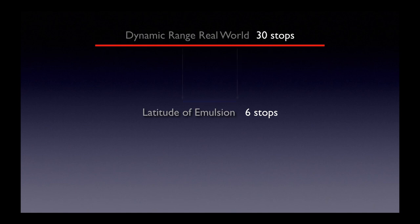Now let's say we slide everything down and decide that our normal exposure is going to be down in the shadow end of the range. We've still only got six stops, so now everything in the shadow area is exposed correctly, but everything in the highlights is overexposed and we've lost all that detail.